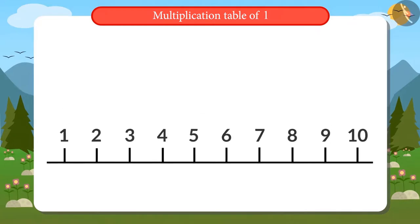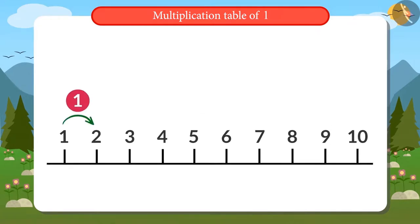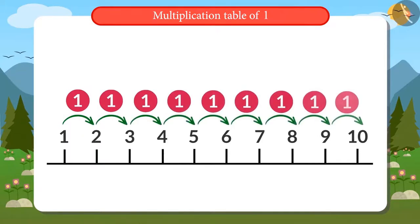If we add one to any number on the number line, we get its succeeding number. This is the number line.